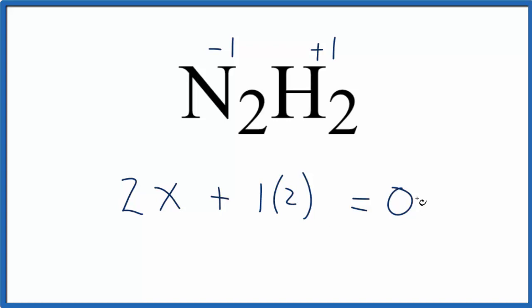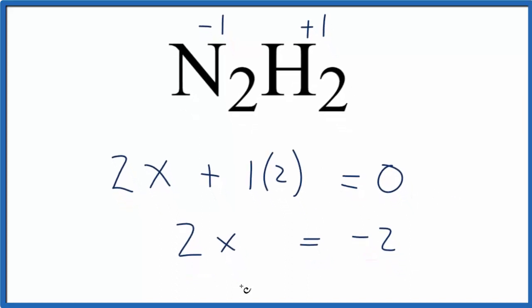So we subtract two from each side, and we have 2X equals minus two, because I added a minus two here to get rid of this, and I have my minus two here. And then I divide both sides by two. X equals minus one, which is what we found as the oxidation number for nitrogen in N2H2.